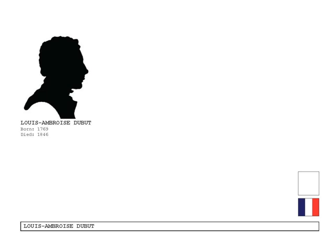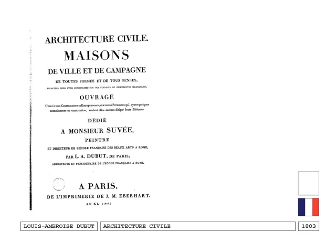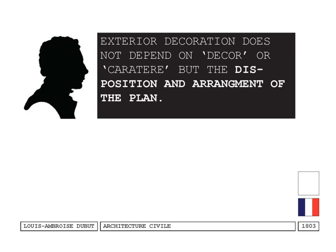The first person I want to mention is Louis Ambroise Dubut, and in particular his Architecture Civile, written in 1803 — a fairly modest treatise. It is dedicated to the study of civil architecture, and it is also a direct critique of his professor Claude-Nicolas Ledoux, a revolutionary architect who was interested in the character of buildings — how the character of buildings expressed something about the architecture. What Dubut essentially says is that exterior decoration, contra Ledoux, does not depend on decor or character, but rather on the disposition and arrangement of the plan.